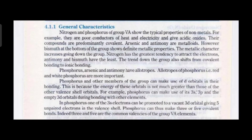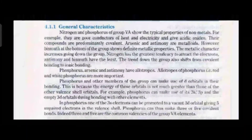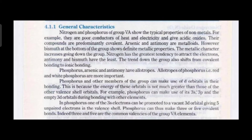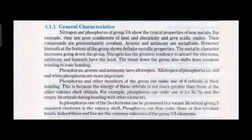When we move from top to bottom in group 5A, the melting and boiling points generally increase, but the trend for bismuth is usually abnormal. The melting point of arsenic is 816 degrees Celsius at 39 atmospheres, while it sublimates at 615 degrees Celsius. The ionization energies, electron affinities, and electronegativities decrease down the group. In group 5A, nitrogen and phosphorus are non-metallic, arsenic and antimony are metalloids, while bismuth is a metal.